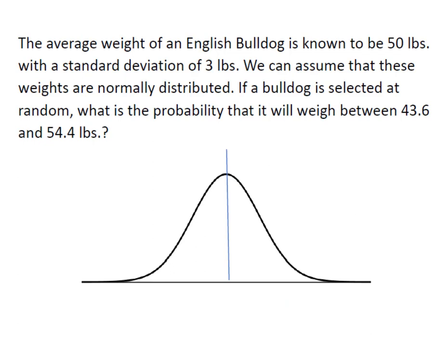The average weight of an English Bulldog is known to be 50 pounds with a standard deviation of 3 pounds and we can assume that the weights are normally distributed. If a Bulldog is selected at random, what's the probability that it will weigh between 43.6 and 54.4 pounds?